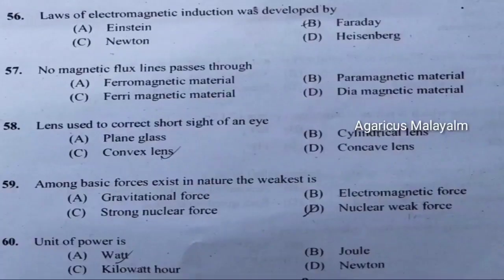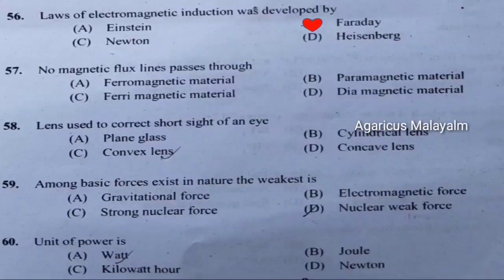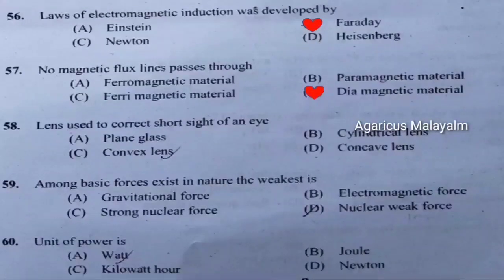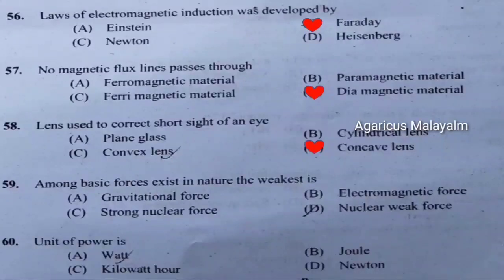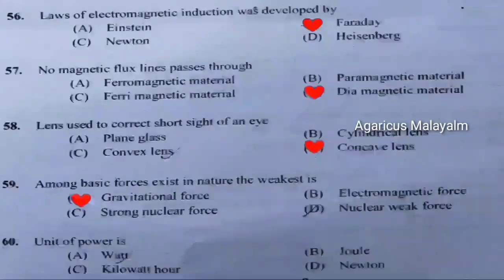Fifty-sixth question: Law of electromagnetic induction was developed by. Correct answer — Faraday. Fifty-seventh question: No magnetic flux line passes through. Correct answer is option D — diamagnetic material. Fifty-eighth question: Lens used to correct short sight of an eye. Correct answer is option D — concave lens. Fifty-ninth question: Among basic forces existing in nature, the weakest is. Correct answer is option A — gravitational force.